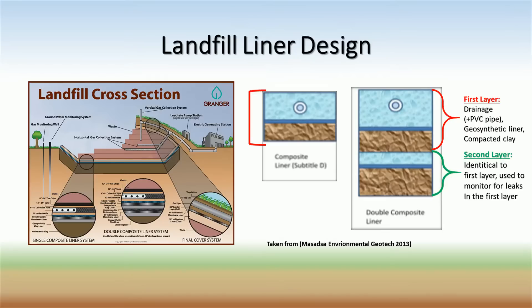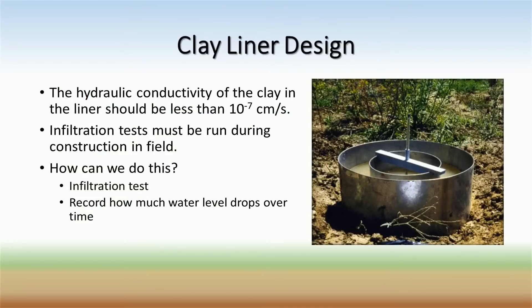Double layer liners are similar but have added protection below the first compacted clay layer. The second drainage layer in a double liner is monitored to detect for possible leaks from the first layer. The clay layer in a liner is extremely important in the protection of the groundwater table from landfill leachate — it is the last line of defense. The hydraulic conductivity, or rate of flow through the clay liner, should be less than 10 to the negative 7 centimeters per second, meaning an extremely slow rate of infiltration. By contrast, a sandy soil will have a hydraulic conductivity that is 100,000 times larger, about 10 to the negative 2 centimeters per second.